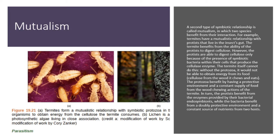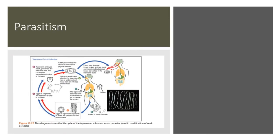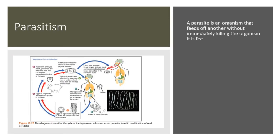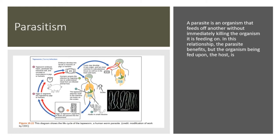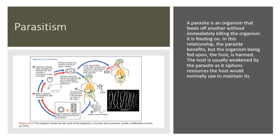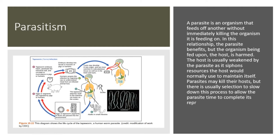A parasite is an organism that feeds off another without immediately killing the organism it is feeding on. In this relationship, the parasite benefits, but the organism being fed upon — the host — is harmed. The host is usually weakened by the parasite, as it siphons resources the host would normally use to maintain itself. Parasites may kill their hosts, but there is usually selection to slow down this process, to allow the parasite time to complete its reproductive cycle before it or its offspring are able to spread to another host.